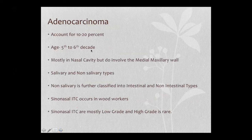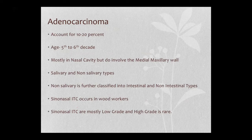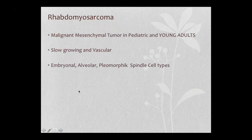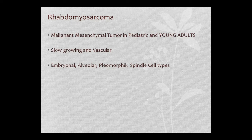Adenocarcinoma mainly involves the nasal cavity but can affect the medial maxillary wall. It is classified into salivary and non-salivary types; non-salivary types are further classified into intestinal and non-intestinal. The intestinal type occurs in woodworkers — carpenters typically present with sinonasal mass. Sinonasal intestinal-type adenocarcinoma is mostly low grade but high grade tumors have poorer prognosis. Rhabdomyosarcoma occurs in pediatric and young adult patients; the differential includes juvenile nasopharyngeal angiofibroma.